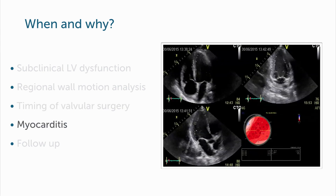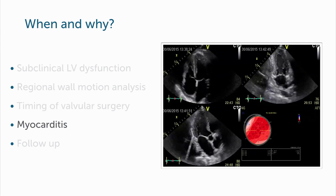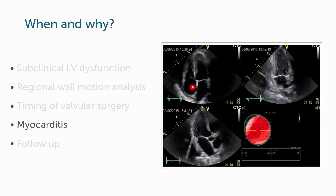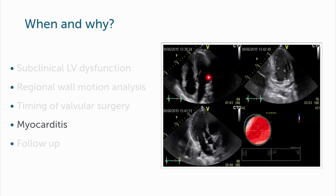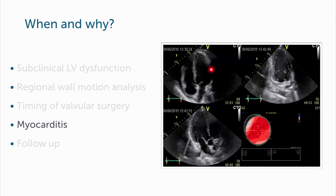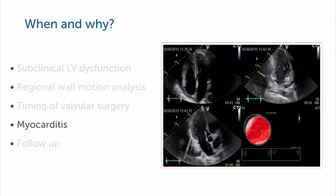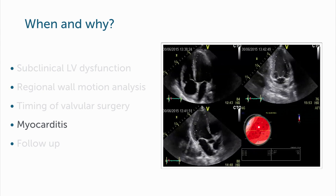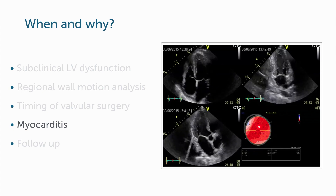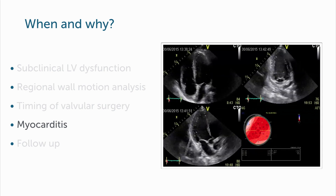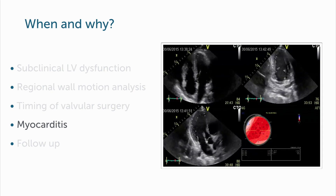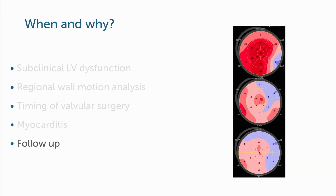Myocarditis: a patient who came in with fever and elevated troponin and CK but with normal ejection fraction. Here we did find a reduction in strain that was also present when we looked at MR images where late enhancement areas were present.